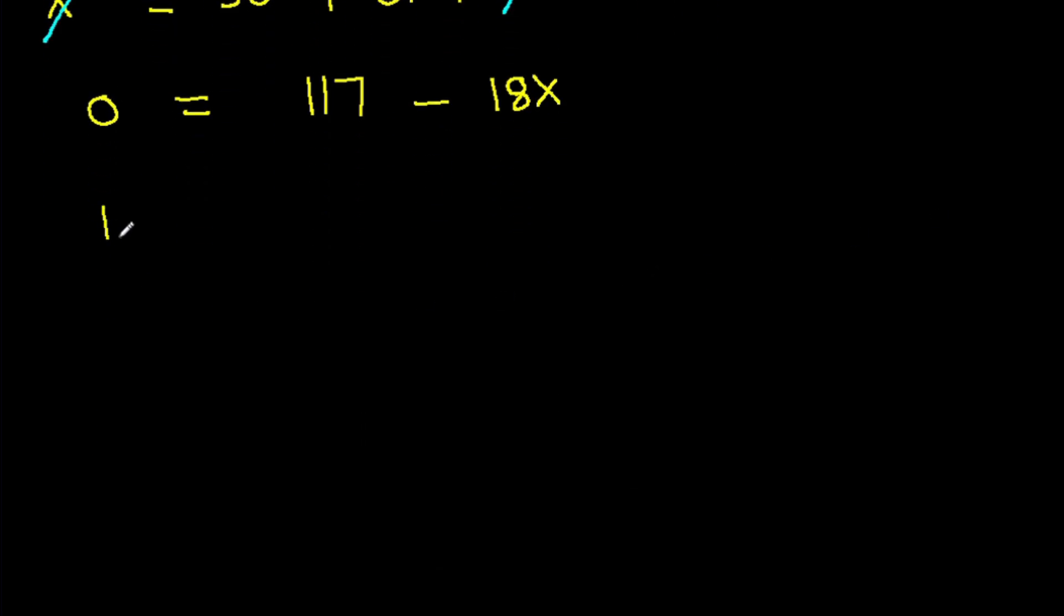And X will be 117. And X will be 117 over 18. And X is 9 times 13, and 18 is 9 times 2. And 9 will get cancelled. So it is 13 over 2.